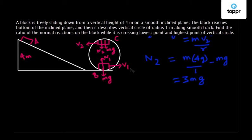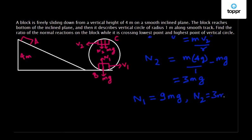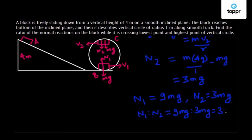Now we know both normal reactions: N1 = 9Mg and N2 = 3Mg. Therefore, the ratio N1 : N2 = 9Mg : 3Mg = 3 : 1.